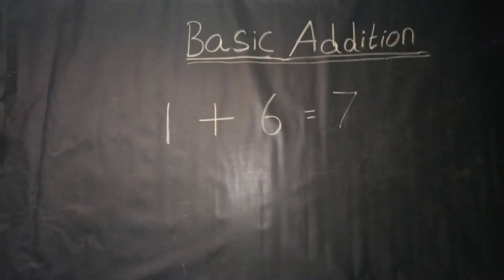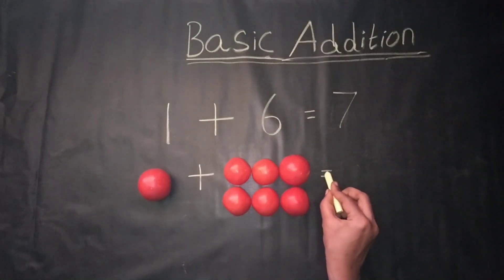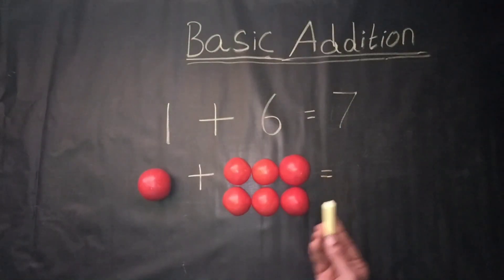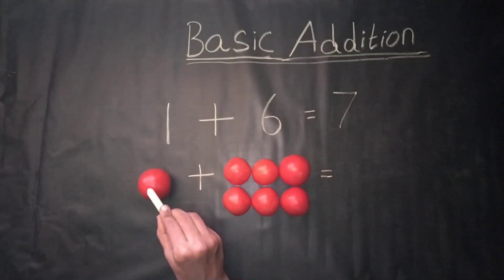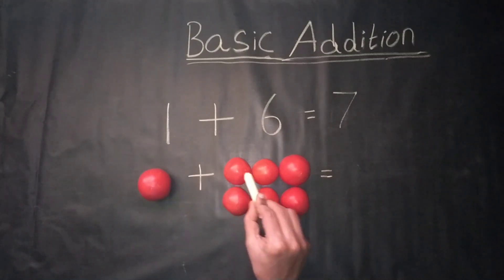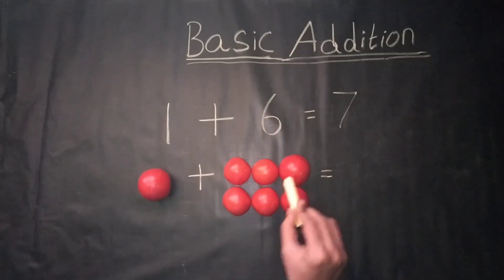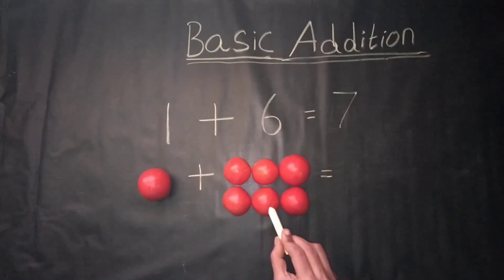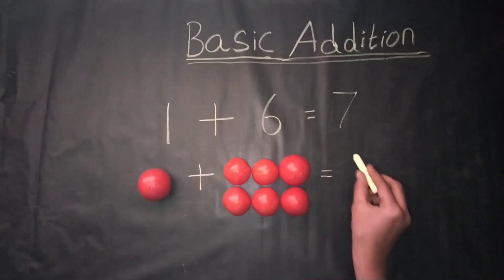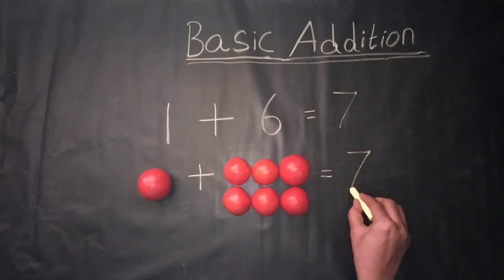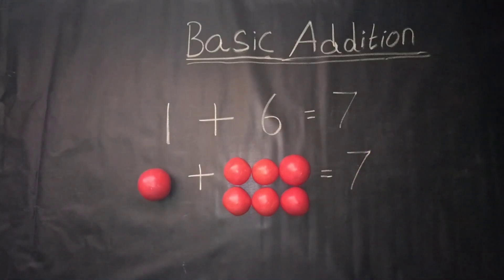Counting by objects, 1 plus 6 is equal to — count together: 1, 2, 3, 4, 5, 6, 7. We get the answer: 7.